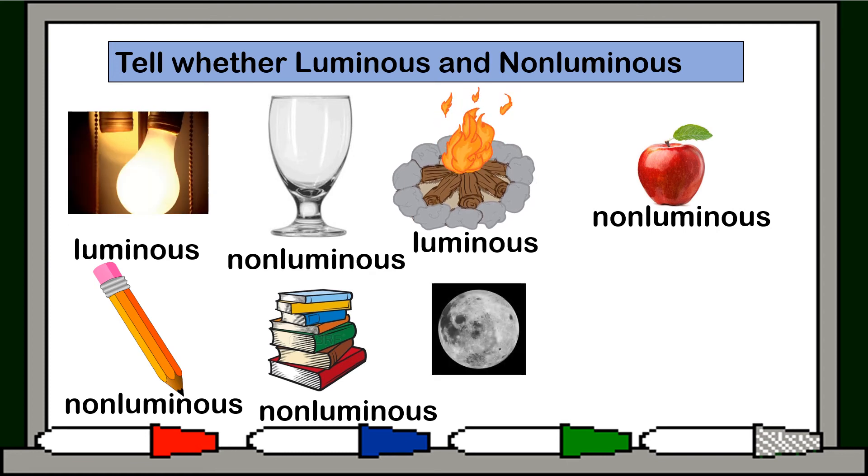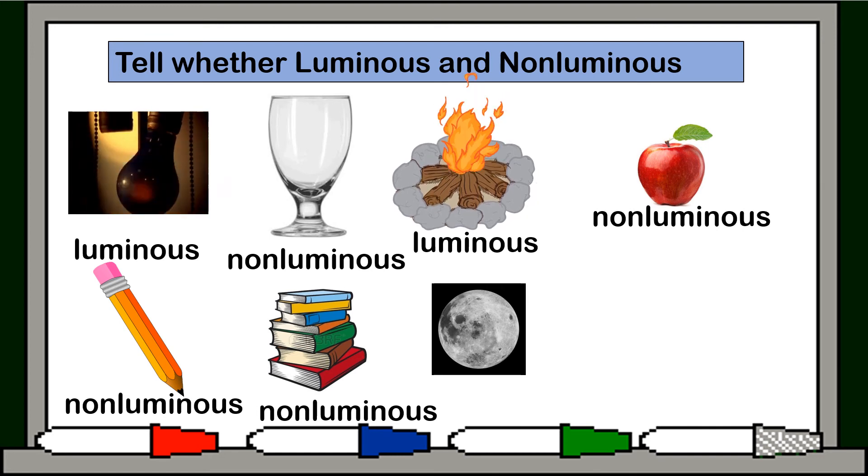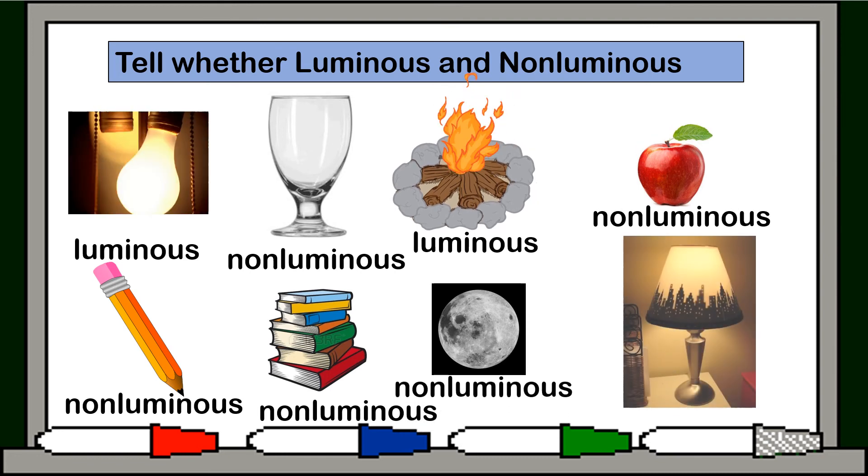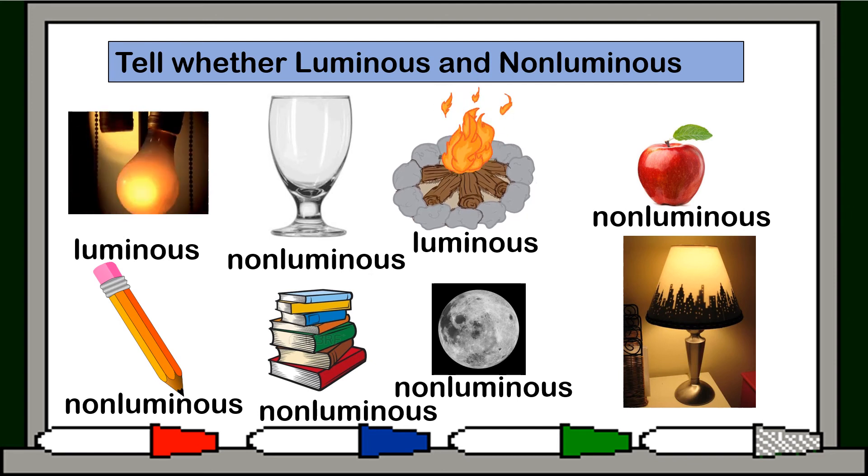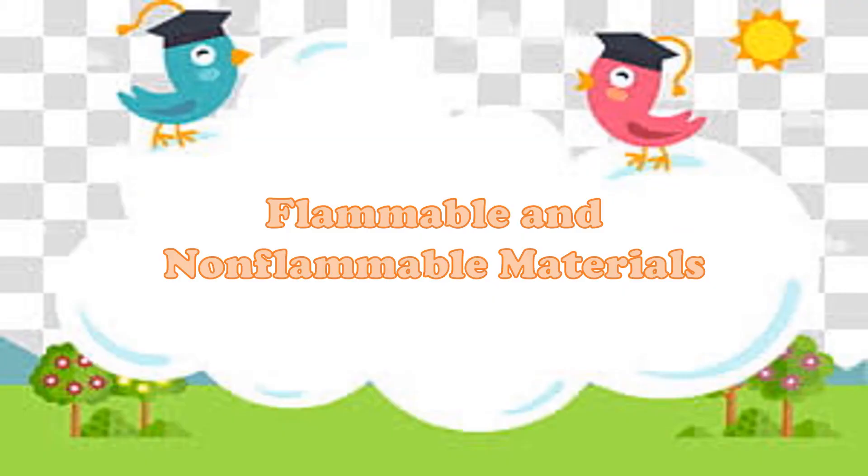How about moon? Moon only gets light from the sun, so this is non-luminous. How about lampshade? We can see light, so this is a luminous object.